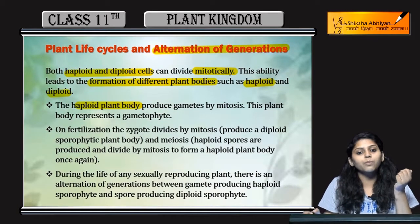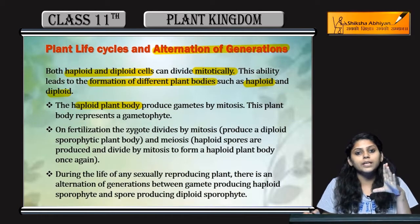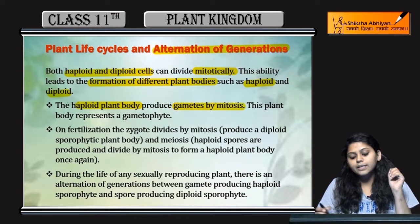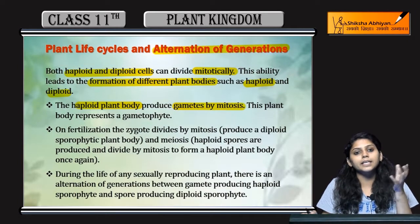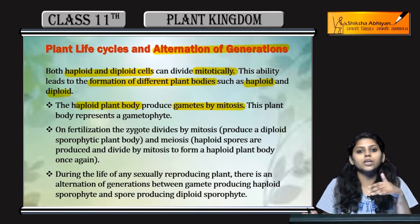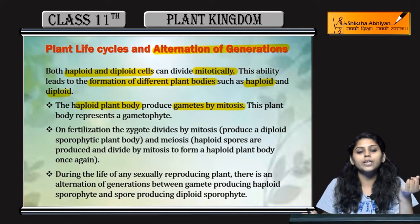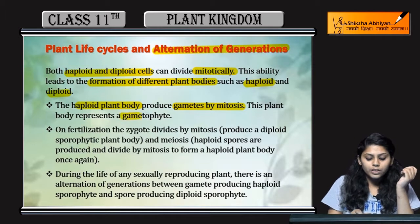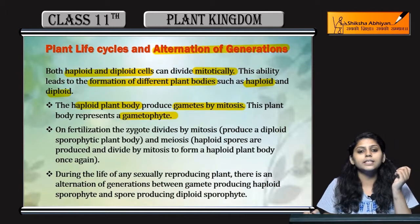Haploid plant body जो है, वो produce होती है gametes by meiosis। Meiosis होगा — reductional division होगी — diploid से haploid बनेंगे। This plant body represents a gametophyte।